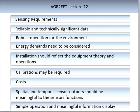Sensor installation can be overlooked but is essential to get right. The installation should reflect the equipment theory and operations of the sensor — incorrect installation can lead to misleading information. Many sensors require calibration; you need to understand the calibration process and its required frequency. Costs need to be calculated carefully, reflecting the return the information achieves. A main advantage of sensors is the savings in labor.